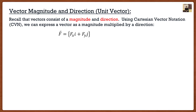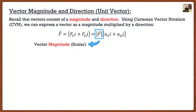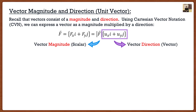So what I can do is take my vector, which has an x component fx in the i direction and a y component fy in the j direction, and write it as the magnitude of the vector multiplied by another vector. The first part out front is the magnitude — simply a scalar. The second part is the vector's direction, which defines the direction of the vector.